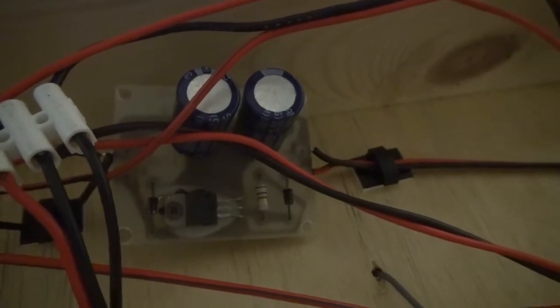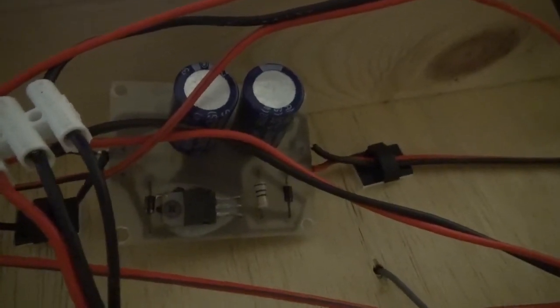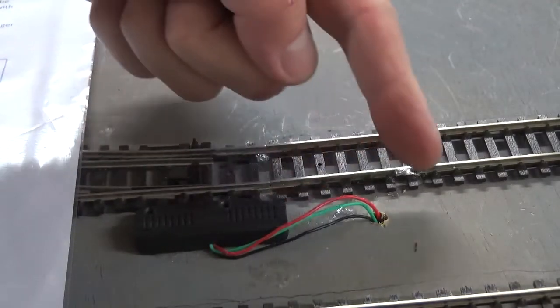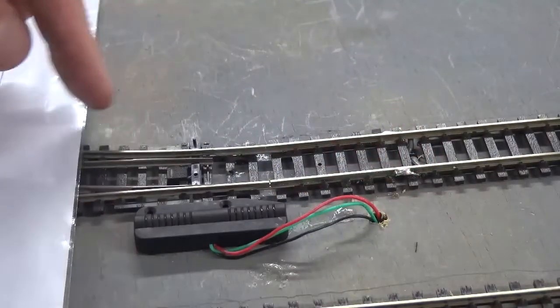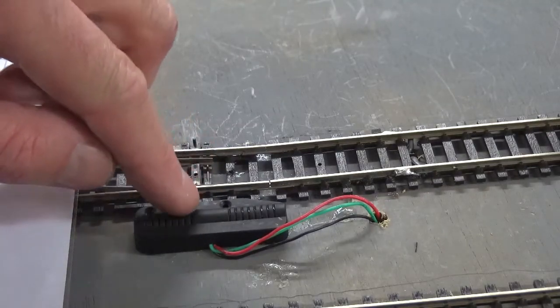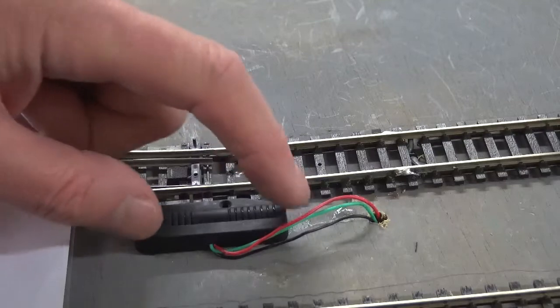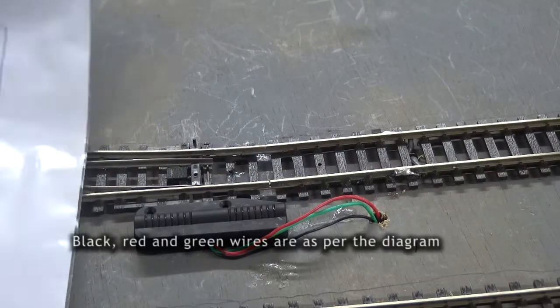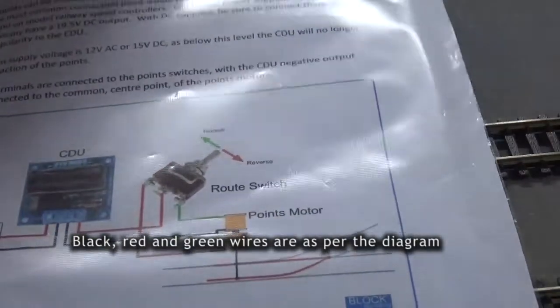This is the CDU that I am using. This is the point motor - three wires into the electrics. It physically connects onto the point arm, and then I've glued it down, but you can use track pins to tuck it in. That's represented by the wires here on the diagram.